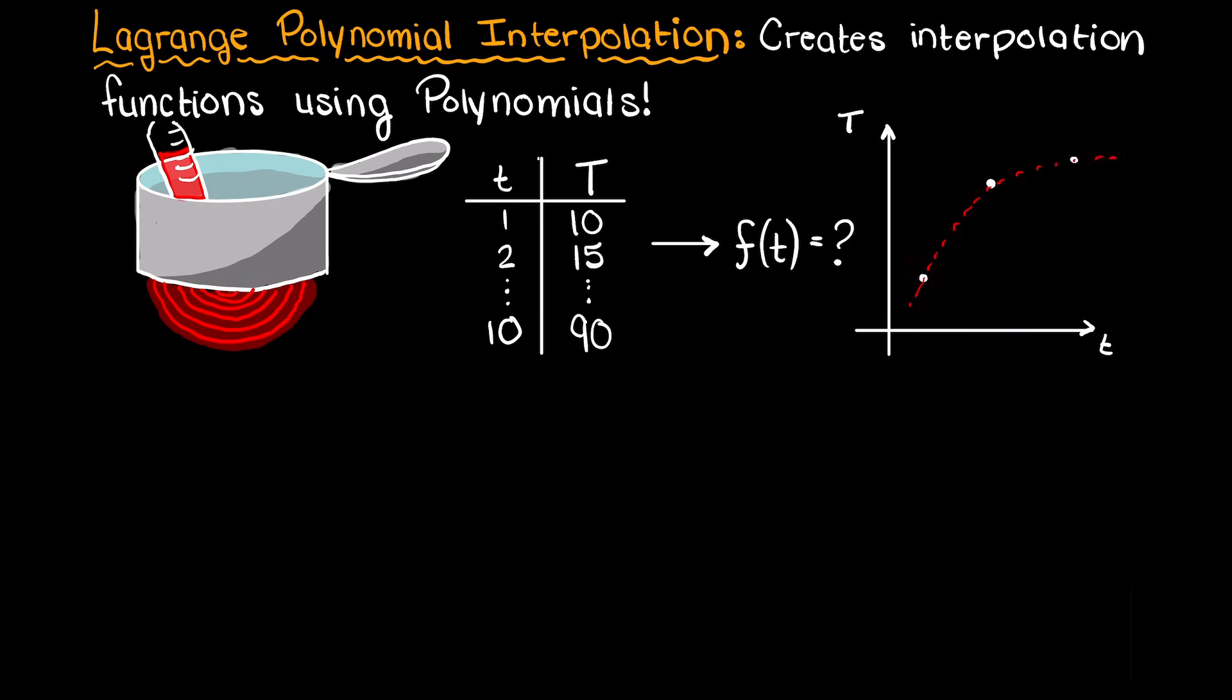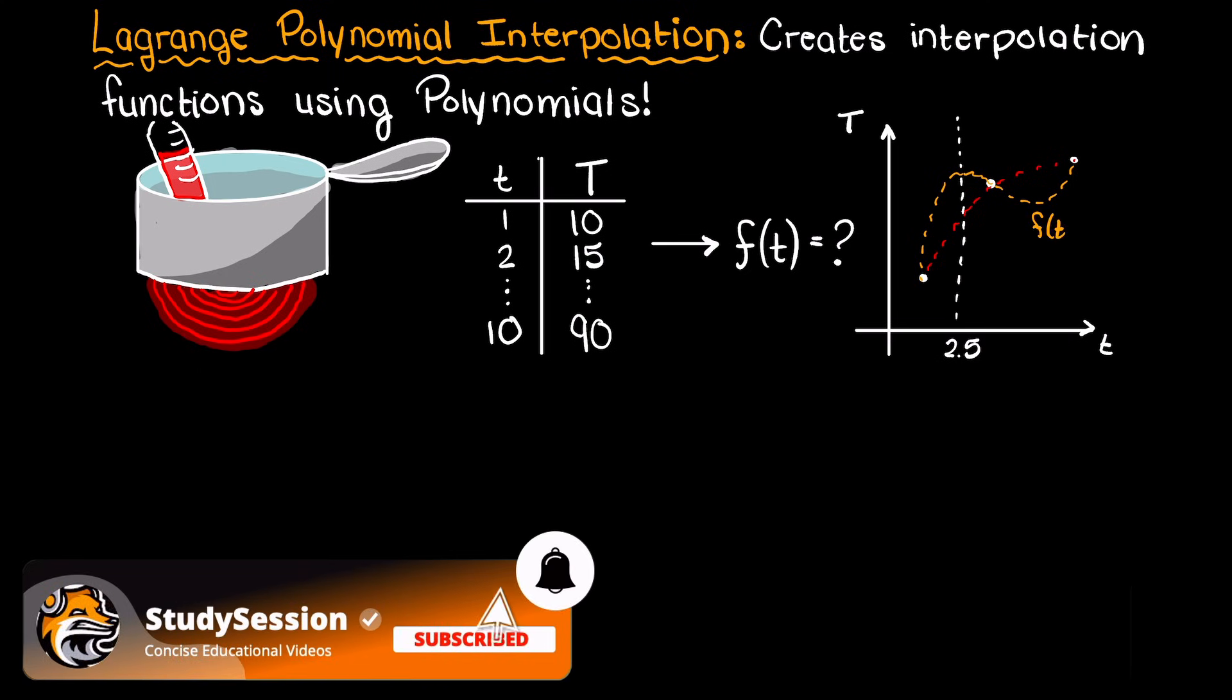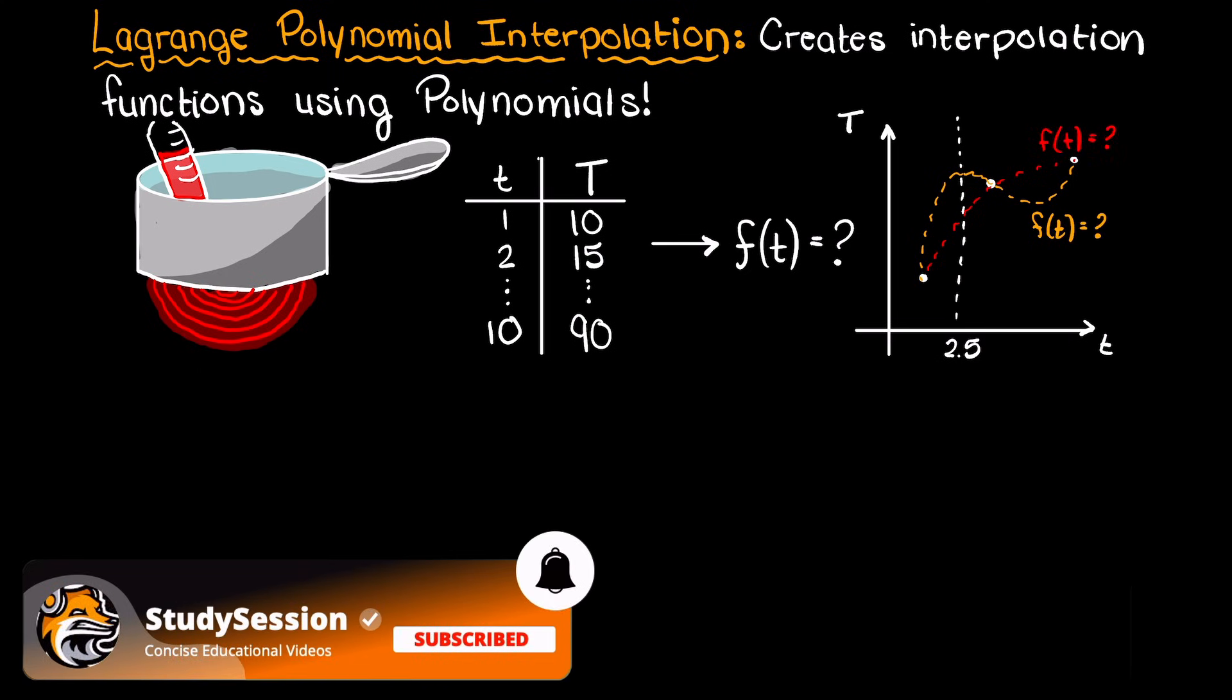For example, let's say that we wanted to find the water's temperature at time 2.5. Well without knowing our interpolating function here, we can't say for sure what that value is.